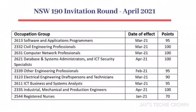In this video, we are going to see the NSW 190 invitation rounds as of April 2021 and the most recent visa grants and their timelines. Here you can see the details of occupation group, the date of effect, and the points. The first one is 2613, which is software and application programmers, who applied with 95 points as of March 2021, were invited.